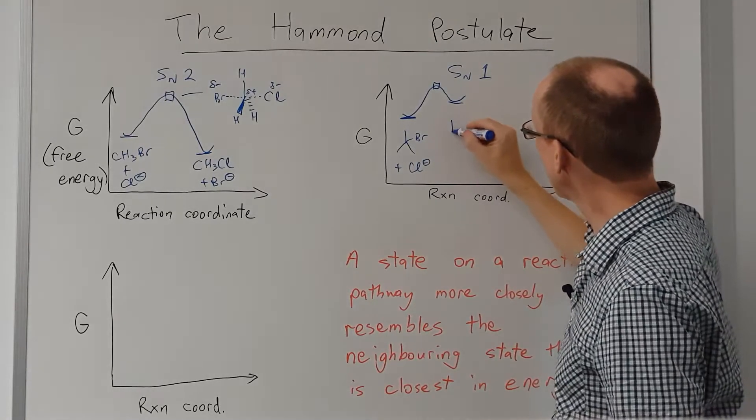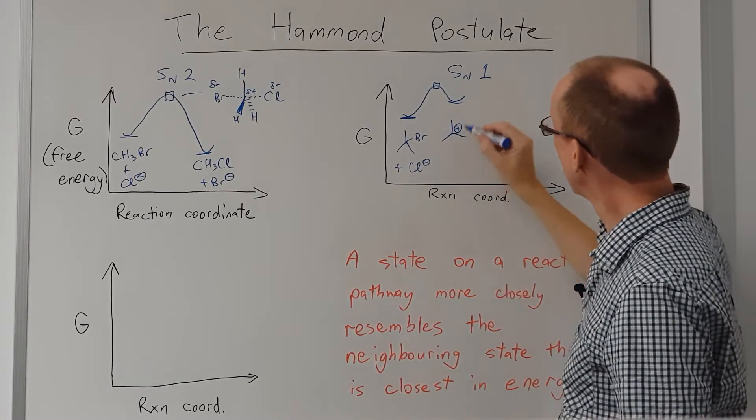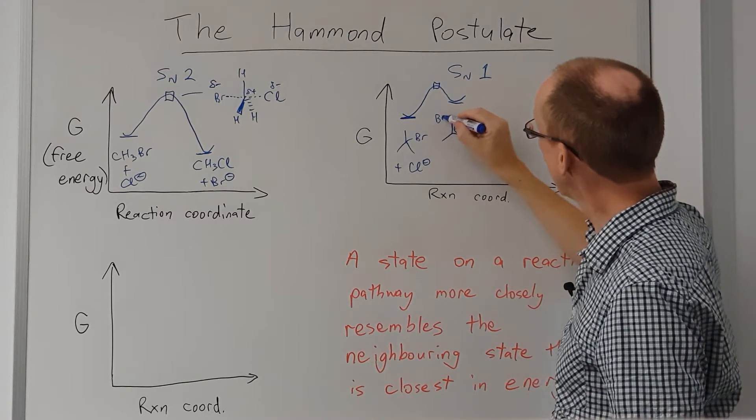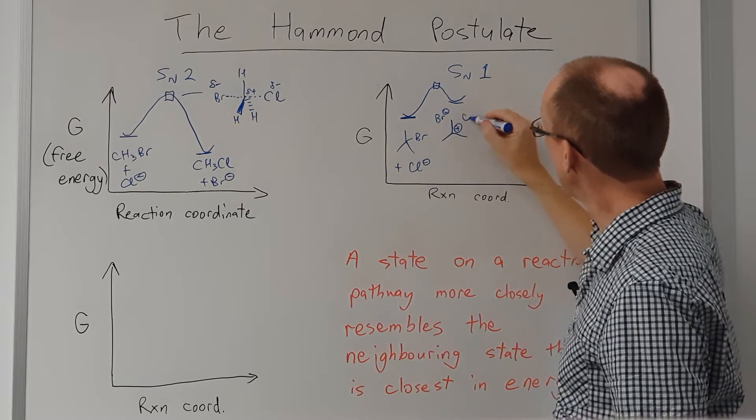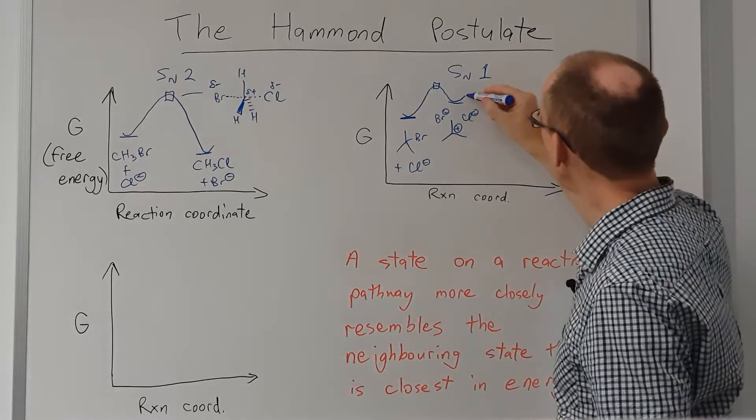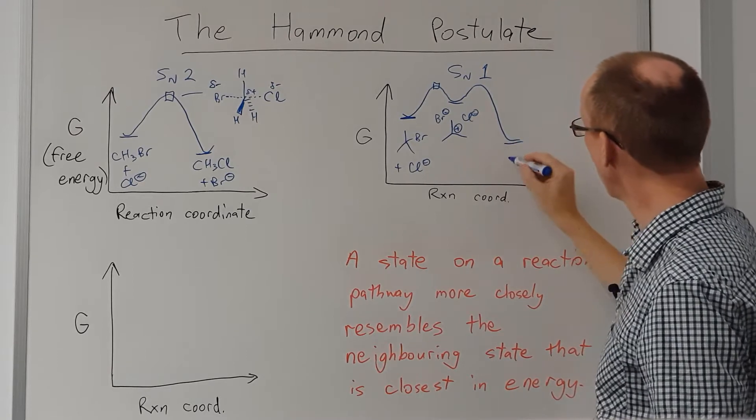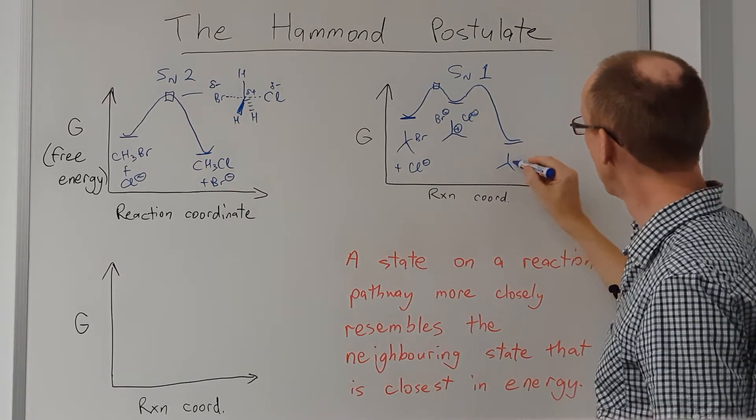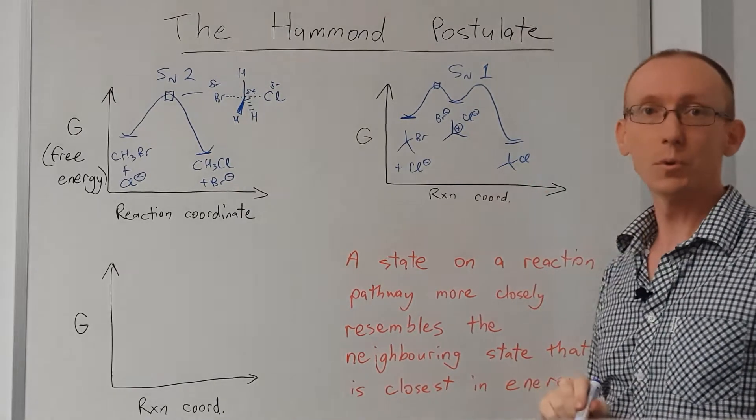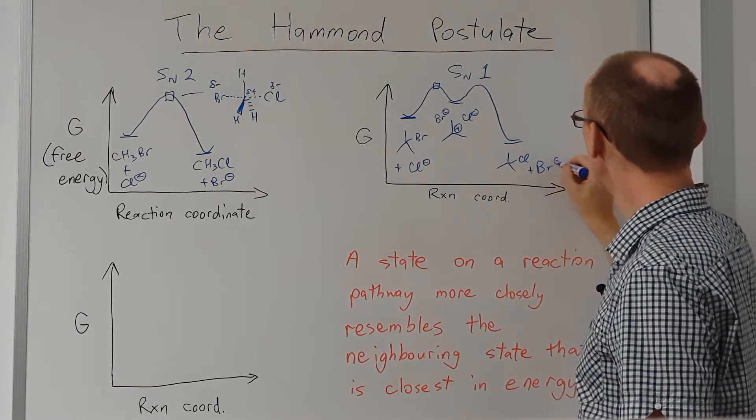That intermediate is a tertiary carbocation. We're going to have a bromide anion and a chloride anion that are separate from that. That goes back up through another transition state and down to our products. In this case, we're going to have tert-butyl chloride and the bromide anion.